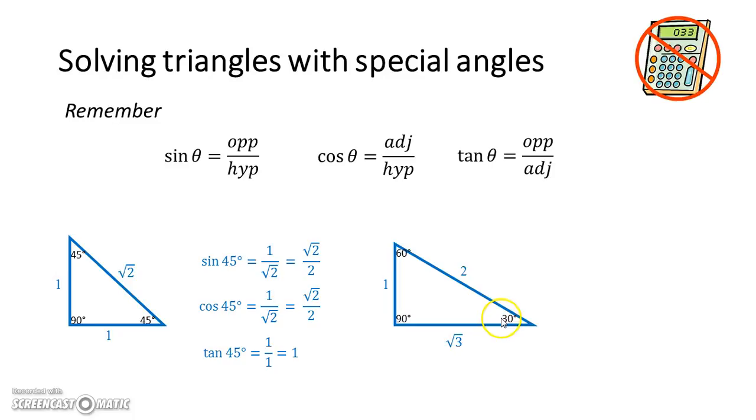Now let's look at the 30. Opposite 30 is one and hypotenuse is two. So sine of 30 is one over two. But look at this. Cos of 60, the one is adjacent to the 60. So adjacent over hypotenuse is one over two.